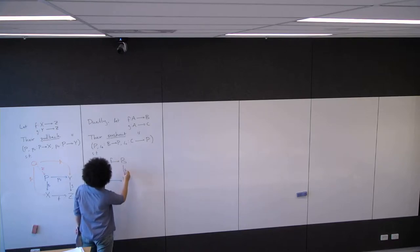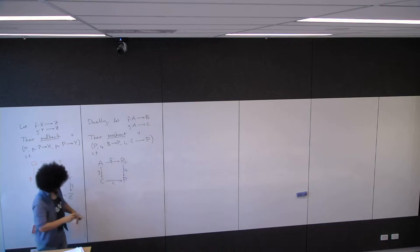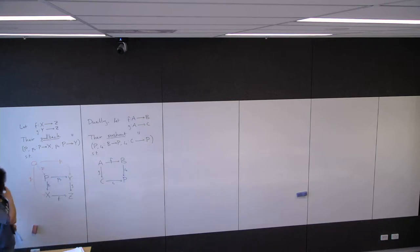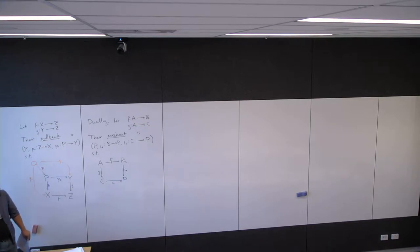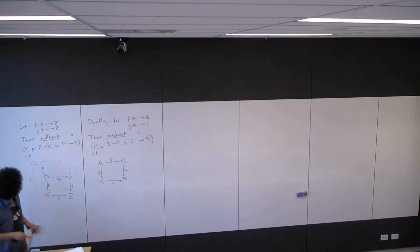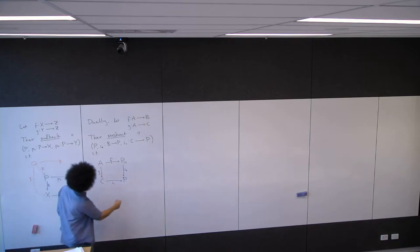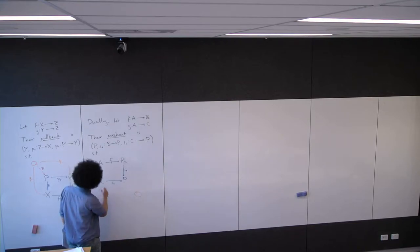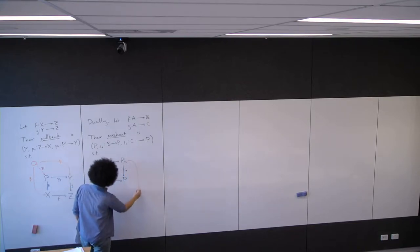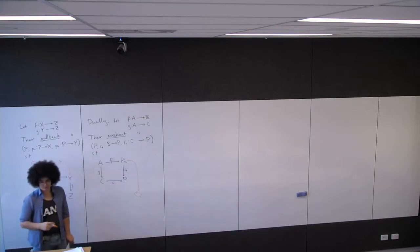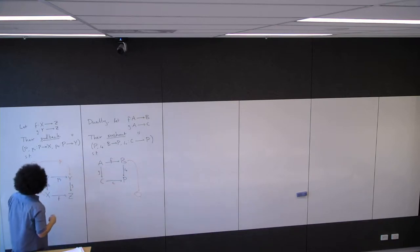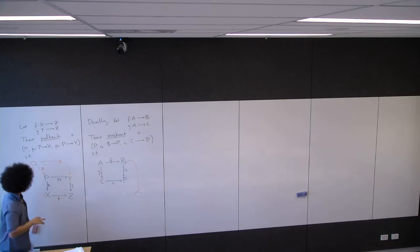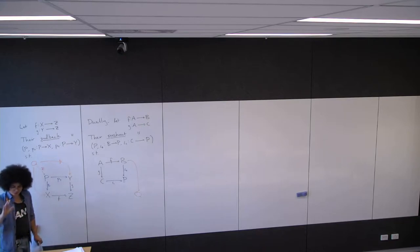Given any other such triple, we have Q. Is there a reason you put the diagram instead of just reversing the arrows? Yeah, arrows should go down and to the right. I could just reverse the arrows in this diagram. Some people do, and those people are monsters.